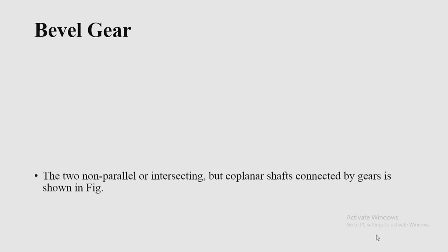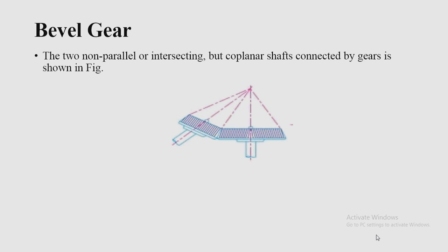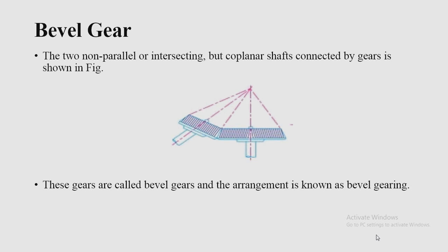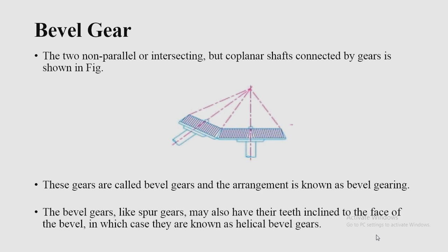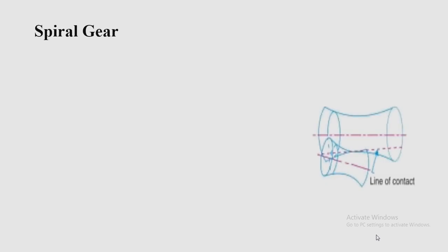Classification (b): Bevel gears. Two non-parallel but intersecting and coplanar shafts connected by gears are shown in the figure — these are bevel gears. These gears are called bevel gears and the arrangement is known as bevel gearing. Bevel gears, like spur gears, may also have their teeth inclined to the face of the bevel, in which case they are known as helical bevel gears.